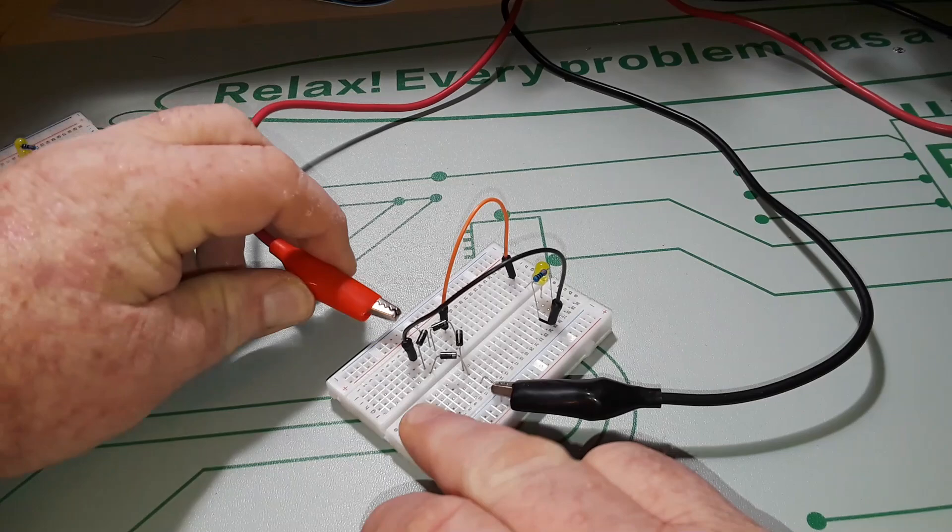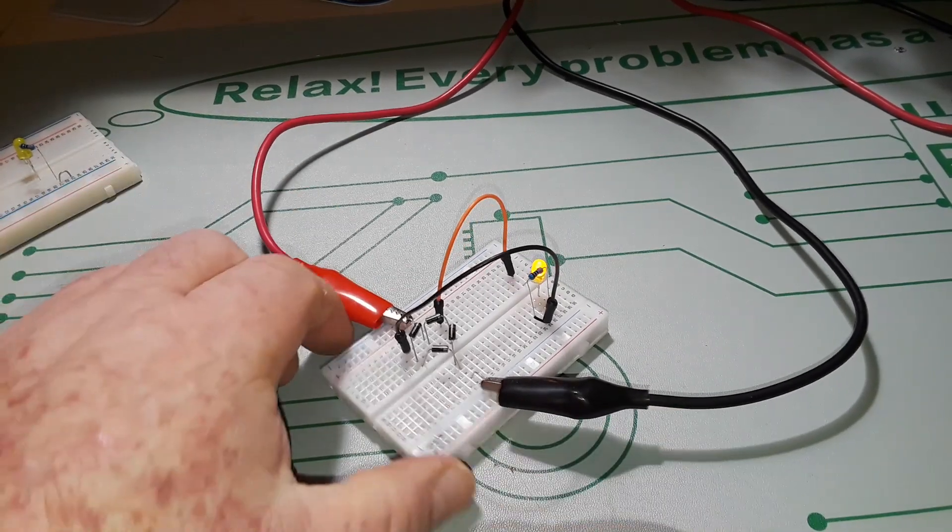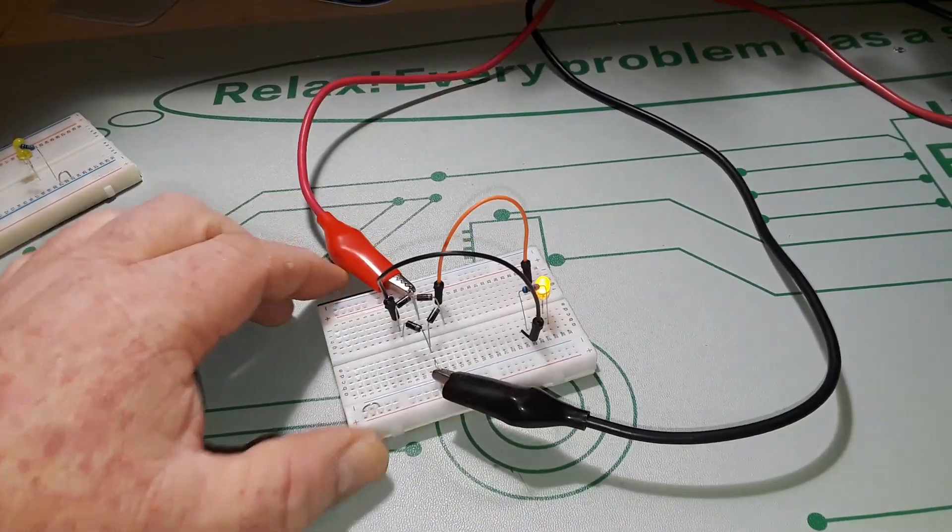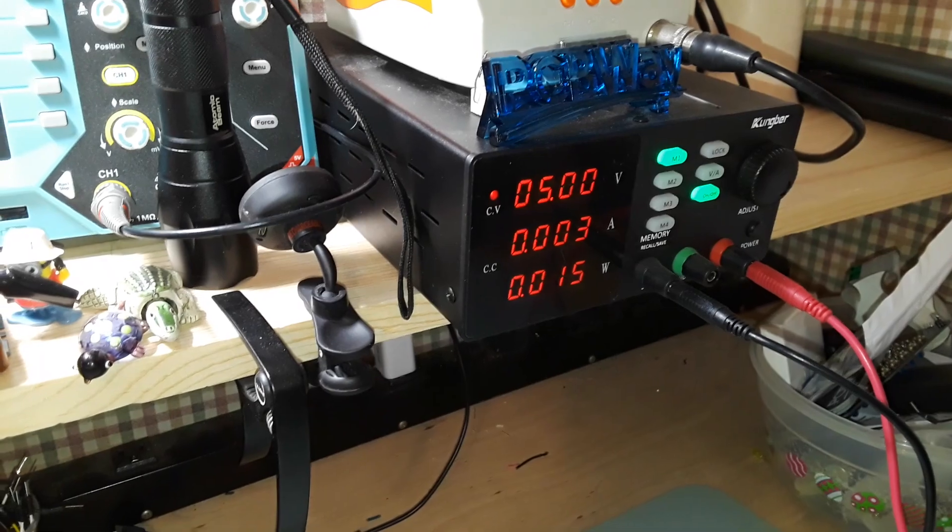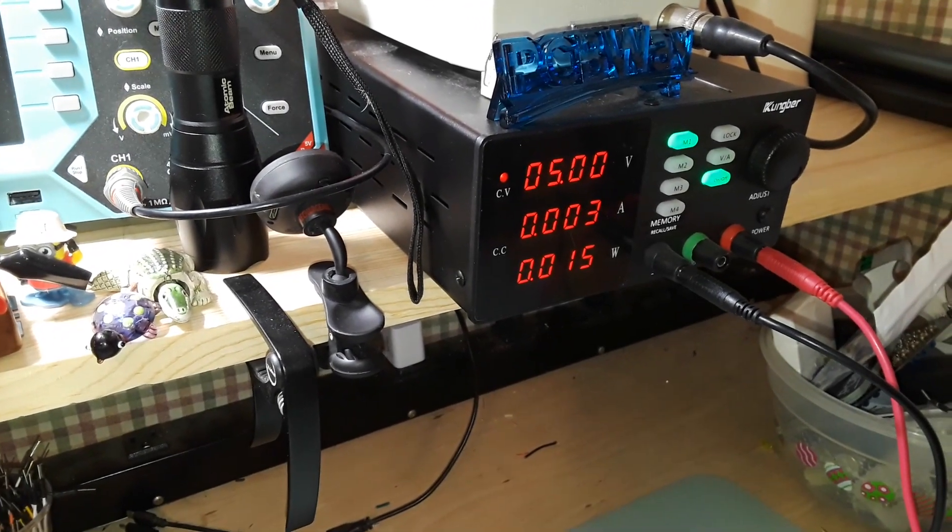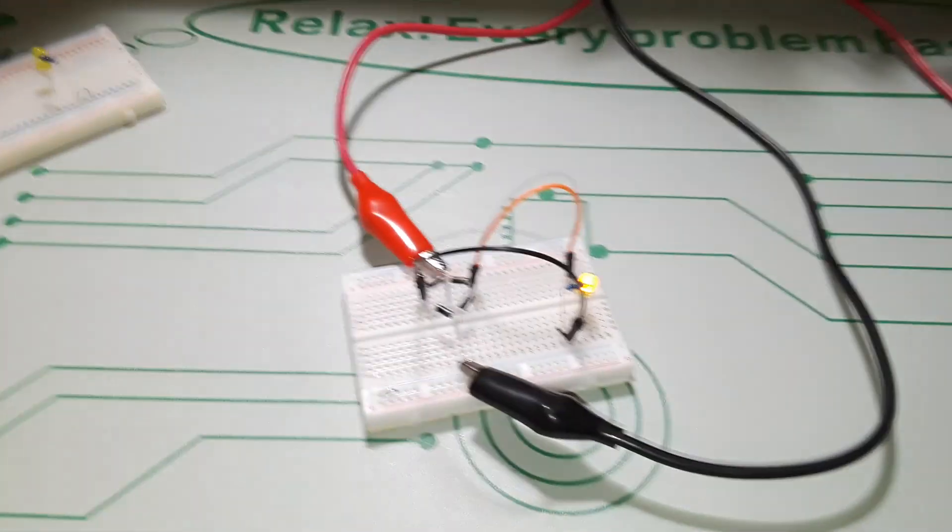So all we have to do is hook up our circuit. Now we're hooking it up with correct polarity. You can see our LED lights.